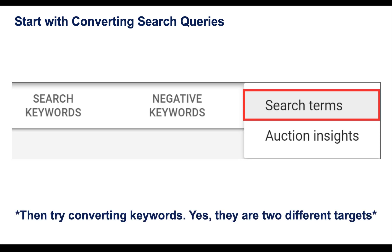The next audience I would create is based on your converting keywords — and yes, converting keywords are totally different from your converting search terms. We've seen the degradation of match types over the past year, so the keyword you're targeting isn't always the search term the user typed into Google.com. These two audiences are most likely going to perform completely differently, so separate them out and test both.